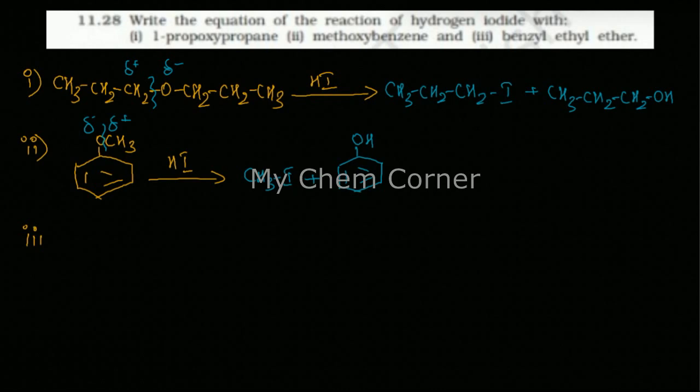Now the third one is you need to react benzyl ethyl ether. This is also same like how you have done here. When you say benzyl group, the benzene will have one alkyl group, so that is CH2. This is going to be bonded with the ethyl group which is to the oxygen, so that is CH2-CH3. This is going to react with HI.